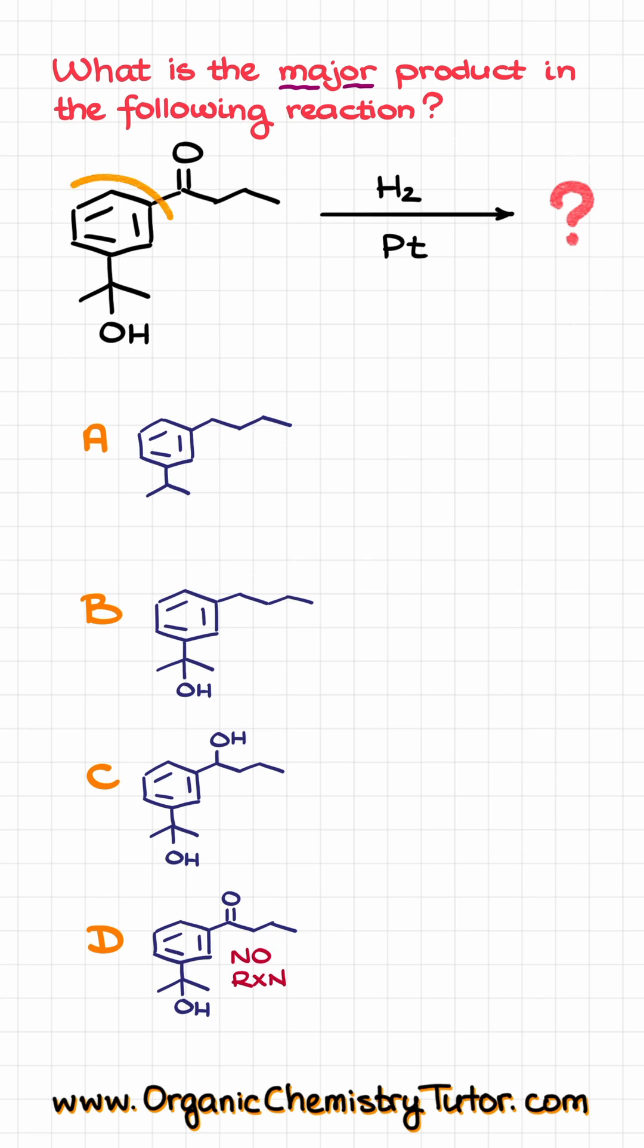In our starting material, we have an aromatic ring over here, we've got a tertiary alcohol, and we also have a ketone group.